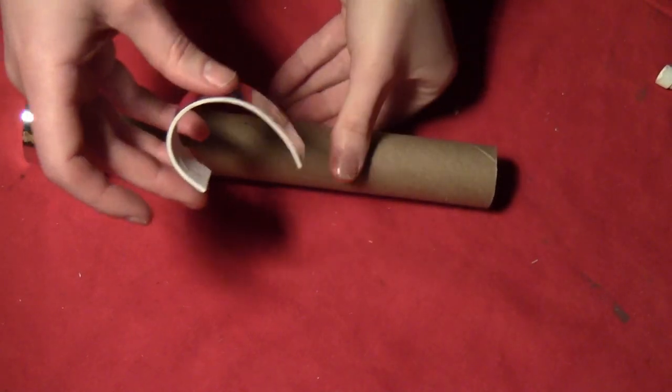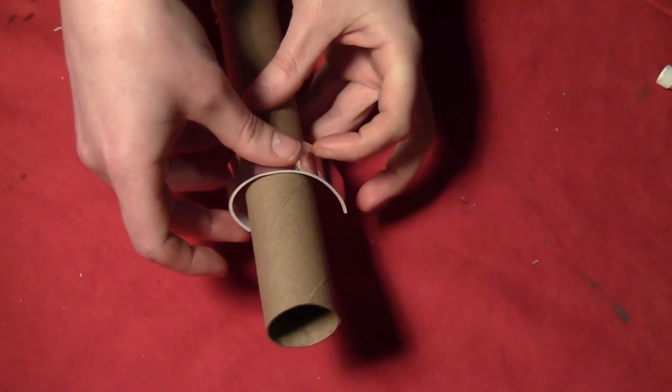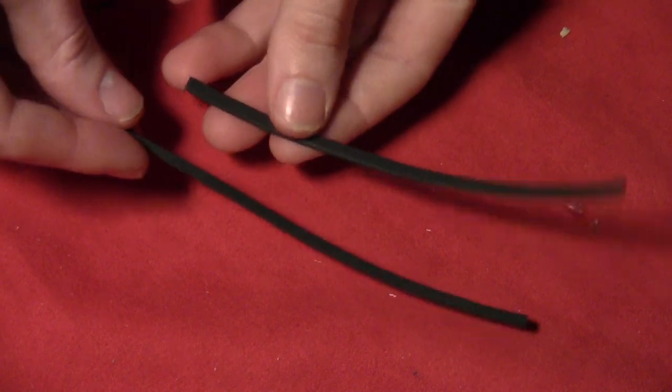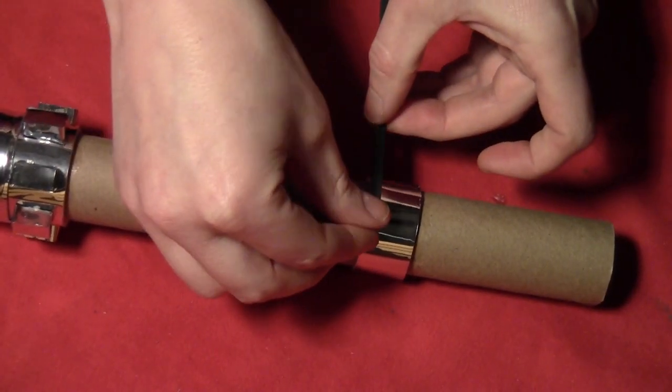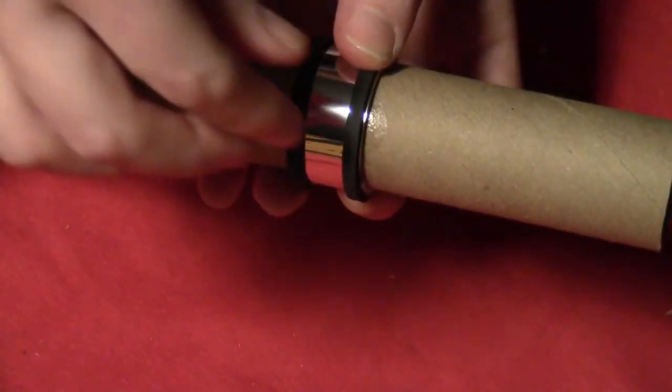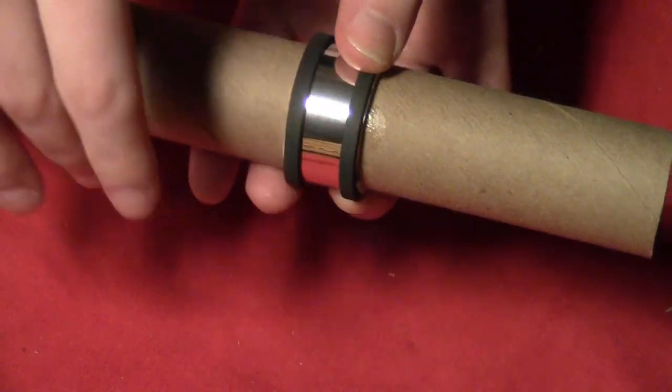Then I took another strip of silver-covered craft foam and put that - it's not quite in the middle, it's up a little bit toward the end. Then I cut two thin strips of black craft foam and put one on each edge of that silver-colored strip, just like that.